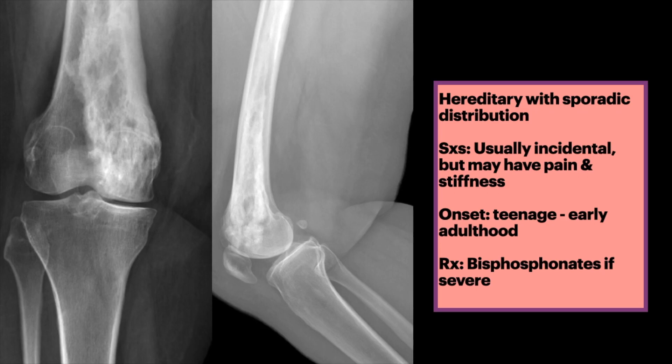Symptoms may include pain and stiffness, presenting in teenage years or early adulthood. Progression is slow but may stabilize in adulthood. Severe symptoms may be treated with bisphosphonates.